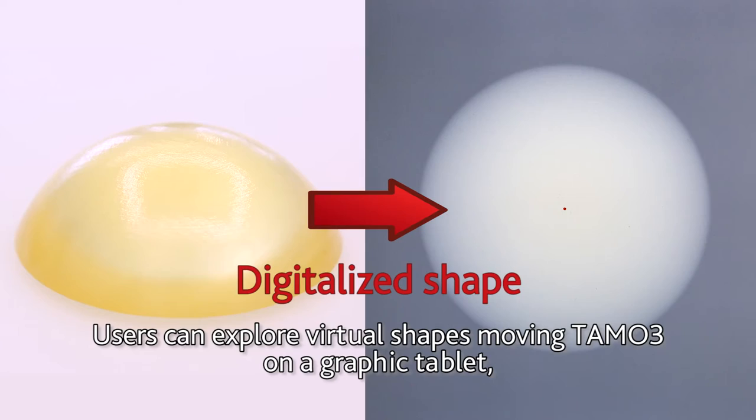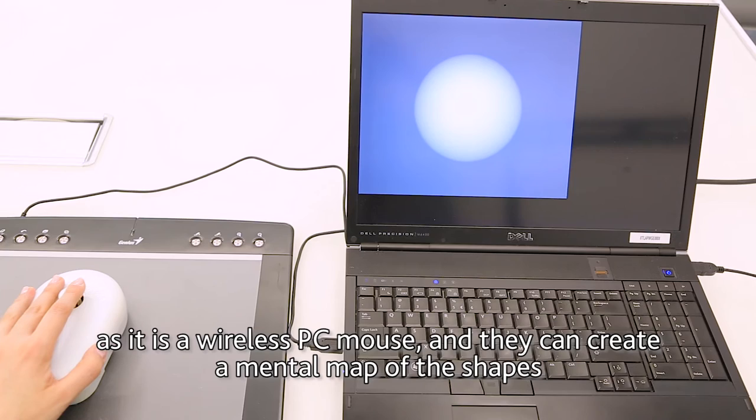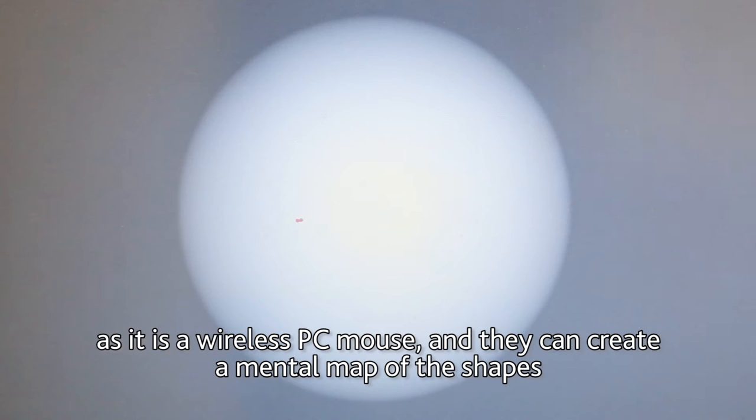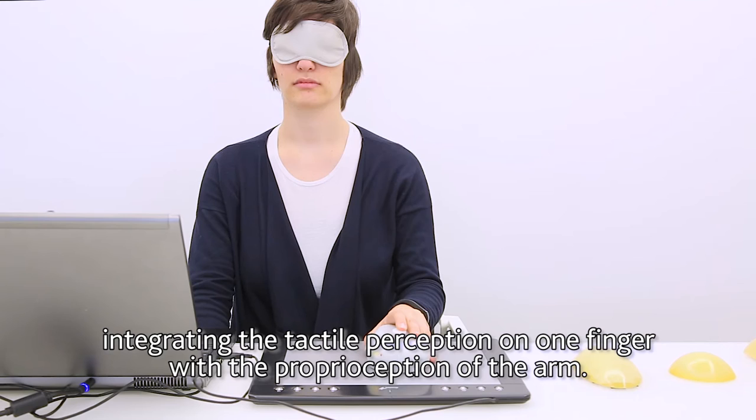Users can explore virtual shapes moving TAMO3 on a graphic tablet, as it is a wireless PC mouse, and they can create a mental map of the shapes integrating the tactile perception on one finger with the proprioception of the arm.